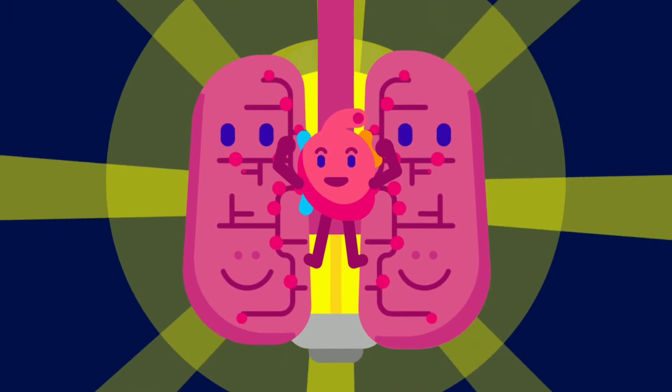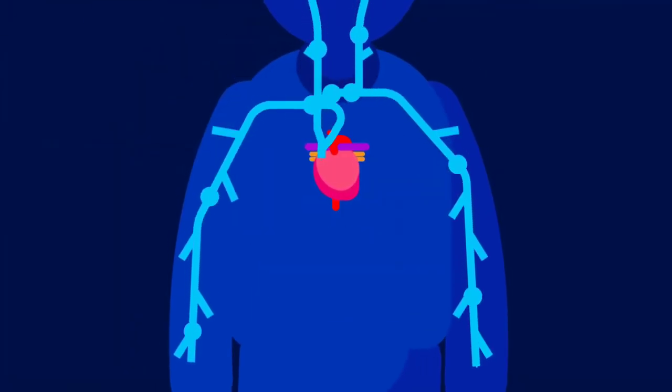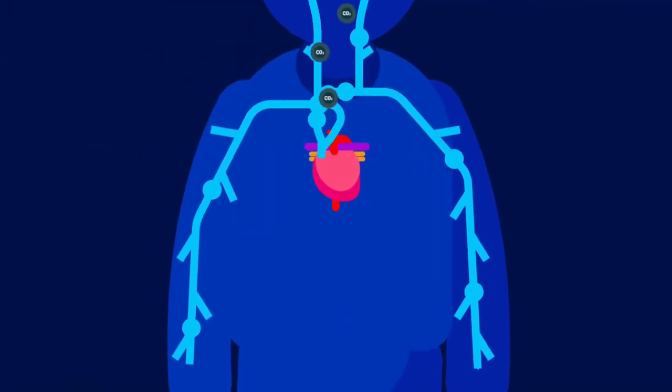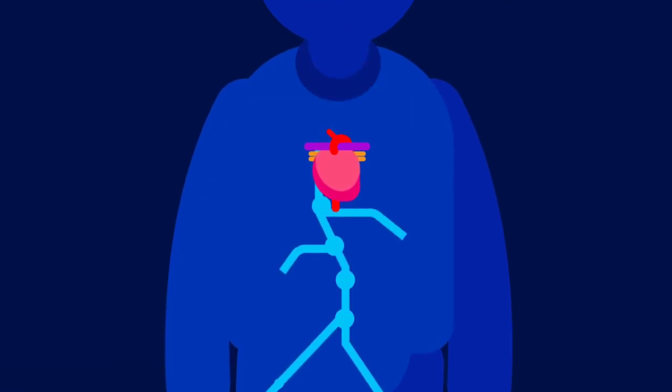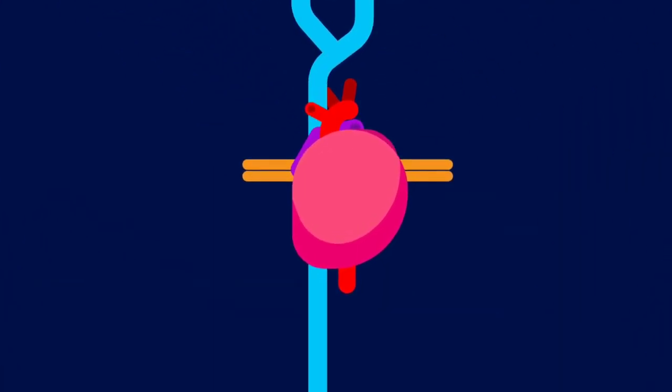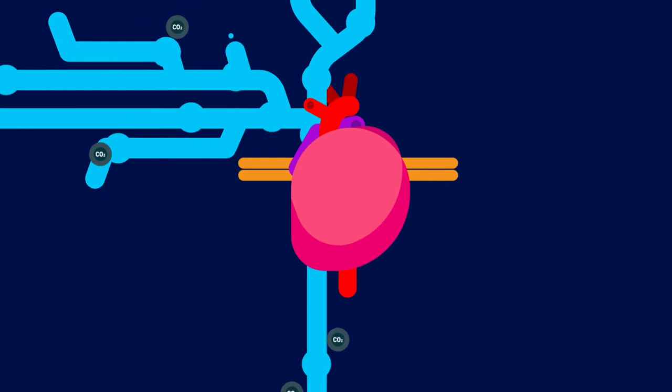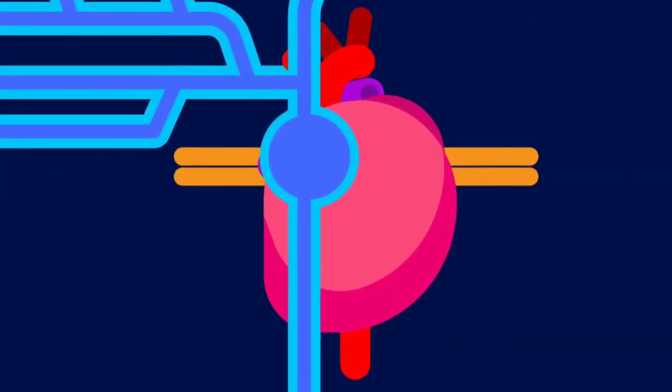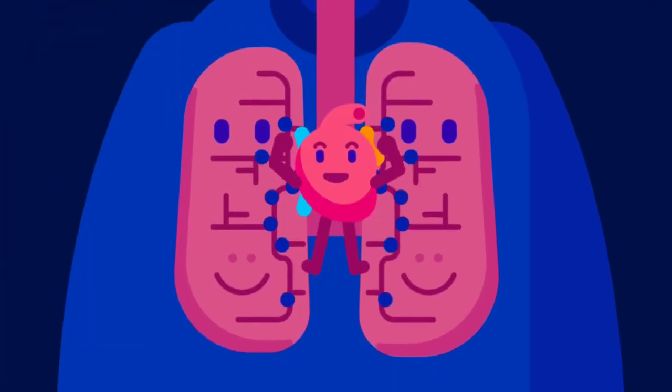The superior vena cava returns deoxygenated blood from the head and arms to the heart. The inferior vena cava returns deoxygenated blood from lower limbs and organs to the heart. It is important to remember that both vena cava carry deoxygenated blood and return it to the heart where the right atrium receives it, and thus the cycle continues.